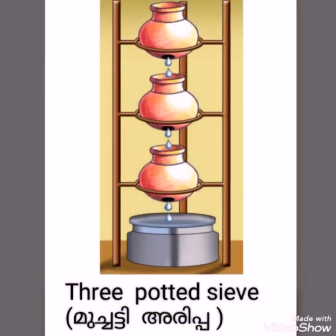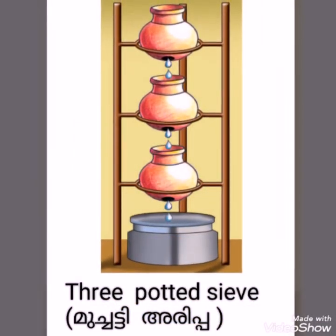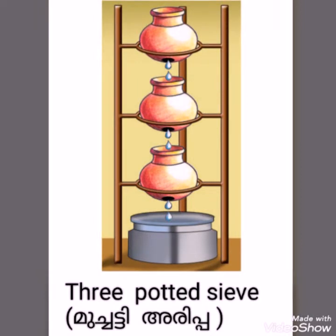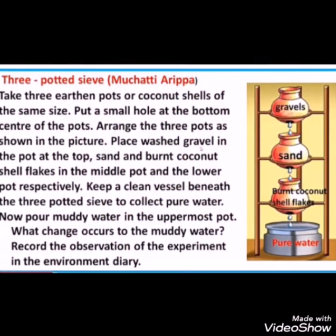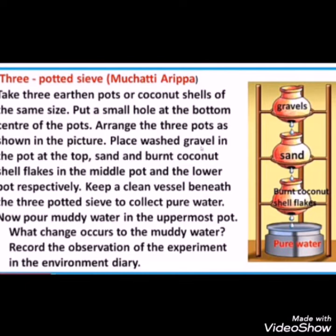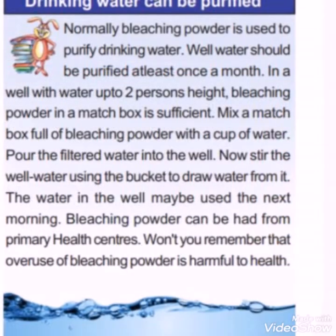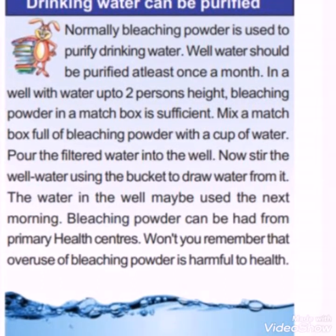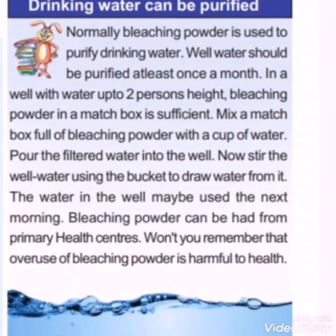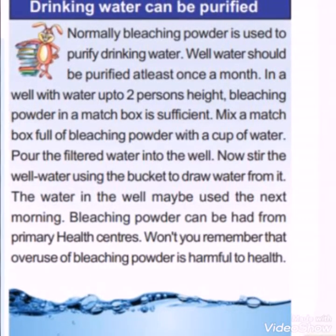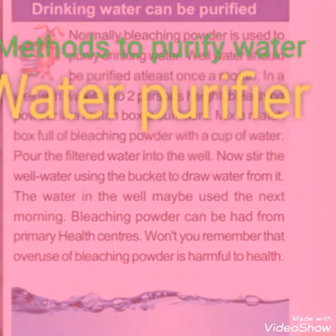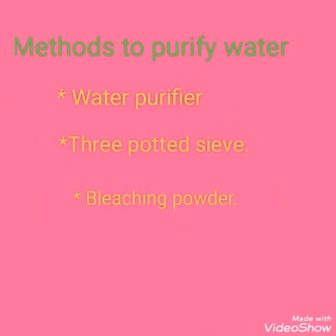Next method for purification of water is the three-potted sieve. In the earlier times, the three-potted sieve was used to purify water. Drinking water can be purified. Normally, bleaching powder is used to purify drinking water. Well water should be purified at least once a month. These are some of the methods for the purification of water: first, water purifier; second, three-potted sieve; and third, bleaching powder.